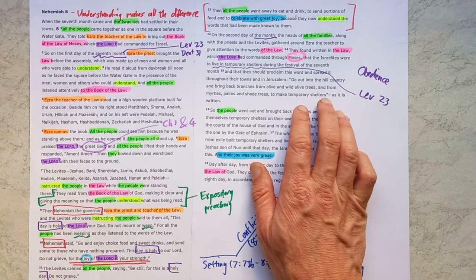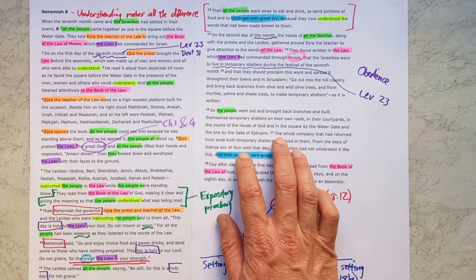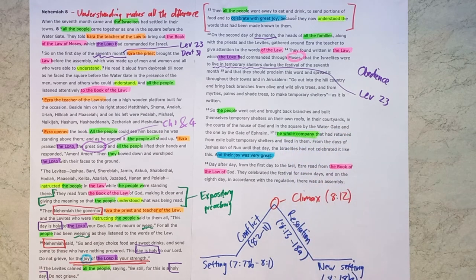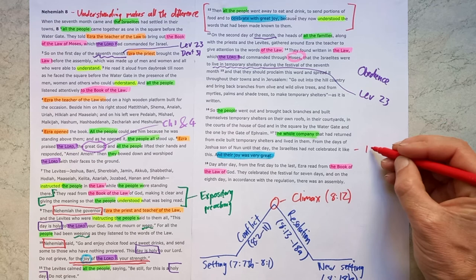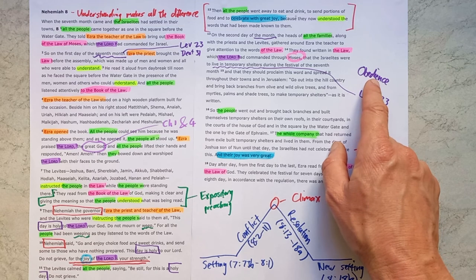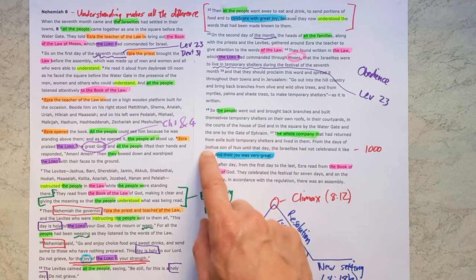They were meant to celebrate this for a week together. And here they go out and tell everyone, come, let's go and get branches. Let's build these shelters. And we are told here, verse 17, that the whole community who returned, the whole company, all the people, built these temporary shelters and lived in them. And it hadn't been celebrated like this since the days of Joshua, son of Nun. So for the last thousand years, they hadn't been celebrating this feast the way they were meant to. They hadn't been obedient. But now, as they understood, the joy of the Lord strengthened them to be a people who obeyed. They listened to God's commands, and they did what God said. And that resulted in very great joy.